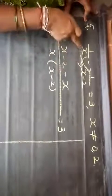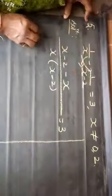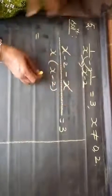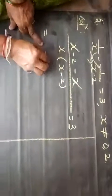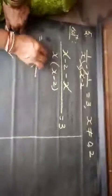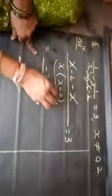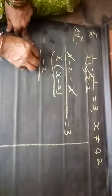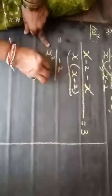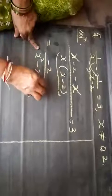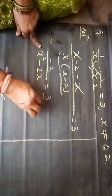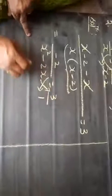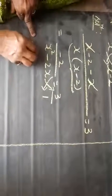Minus x into 1 is x. Now the plus x and minus x will get cancelled, leaving only minus 2. In the denominator, take the multiplication and remove the bracket: x into x is x squared, minus x into 2 gives 2x, which is equal to 3. Since there is no number below it is 1.